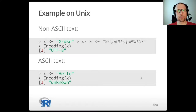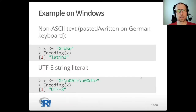This works nicely on Unix when the native encoding is UTF-8. When we enter the string 'grüße' by typing or pasting, we get the UTF-8 encoding flag. A string 'hello' gets the encoding flag unknown because it is ASCII. On Windows running in a Latin-1 locale, you can enter 'grüße' by pasting or using a German keyboard, and it will get the Latin-1 flag. We can also enter 'grüße' using backslash-u escapes, in which case it will be a UTF-8 string. R will automatically convert the string to the right encoding if it needs to, and things work well.